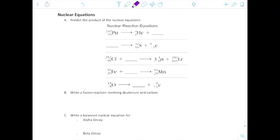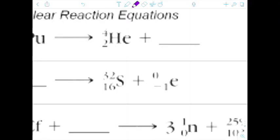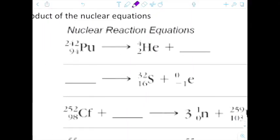It says predict the products of the nuclear equations. In our first one, we see that we have plutonium. It produces a helium in an alpha decay. When we're balancing these out, the one thing that we want to focus on is the mass number on top has to equal on both sides. So we started with 242. We already have 4 over there, so subtract 4 and we go to 238.